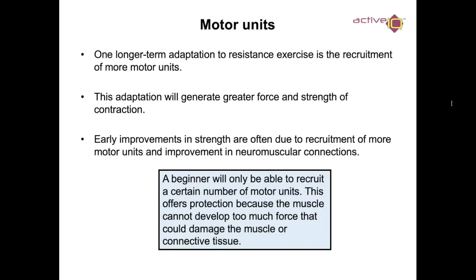One long-term adaptation to resistance exercise is the recruitment of more motor units, which generates greater force and strength of muscle contraction. Early improvements in strength are often due to the recruitment of more motor units and improved neuromuscular connections — the whole 'use it or lose it' theory. If you use your muscle and keep working it through the motor units, it will help you generate greater force and strength.